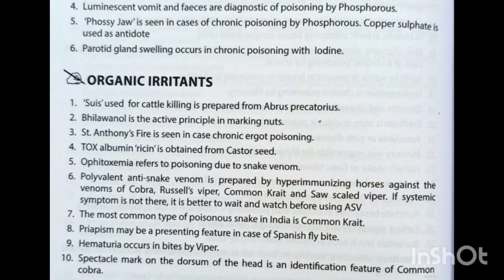Organic irritant poisons used for cattle killing is prepared from Abrus precatorius. Bhilawanol is the active principle in marking nut. St. Anthony's fire is seen in chronic ergot poisoning. Toxalbumin ricin is obtained from castor seeds. Ophitoxemia refers to poisoning due to snake venom. Polyvalent anti-snake venom is prepared by hyper-immunizing horses against the venom of cobra, Russell's viper, common krait, and saw-scaled viper. If systemic symptoms are not present, it is better to wait and watch before giving ASV.